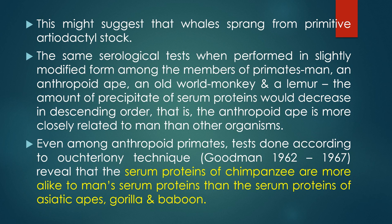This suggests that whales sprang from a primitive artiodactyl stock. The same serological test, performed in a slightly modified form among members of the primates — man, anthropoid ape, Old World monkey, and lemur — showed that the amount of precipitate of serum protein decreases in descending order, meaning the anthropoid ape is more closely related to man than other organisms. Even among anthropoid primates, tests done according to the Nuttall technique revealed that the serum protein of chimpanzee is more similar to man's than that of the Asiatic apes, gorilla, and baboon.